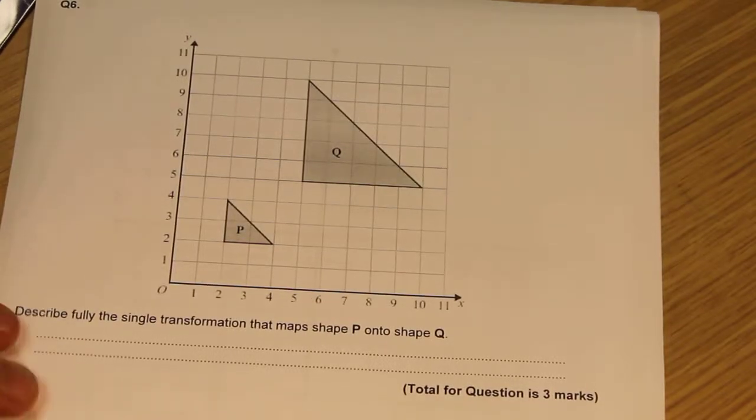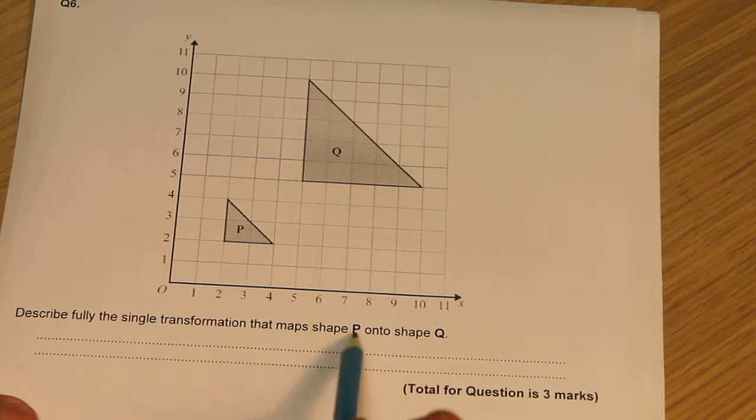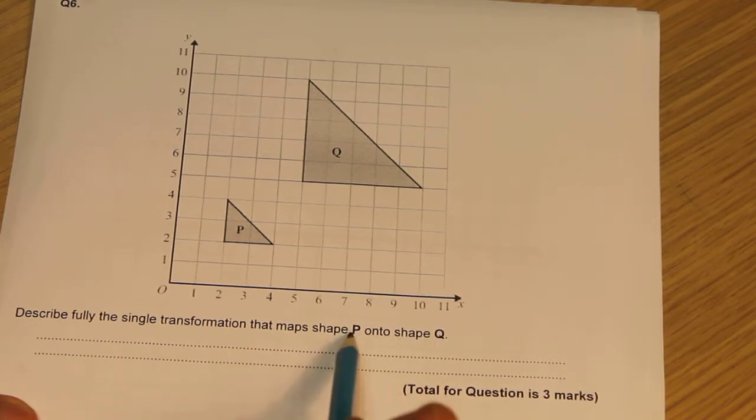This is question 6. It's asking me to describe the transformation which maps P onto Q. It's really important to look at the order of those. I'm going from P to Q.